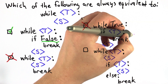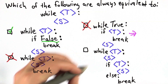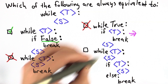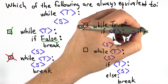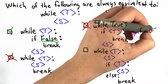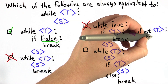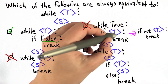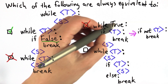For this to be equivalent, what we should have written instead would take the opposite of the test condition. So if we had 'if not', which changes true to false and false to true, then the test condition triggers the break — this would be equivalent to the original loop. What we have is not.